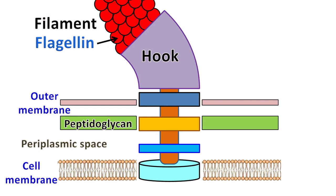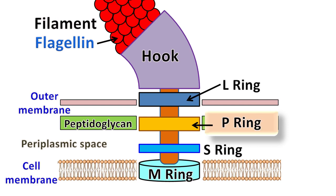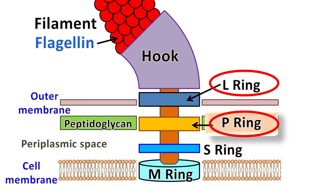The basal body has a rod-like structure which is connected with disc-like structures known as the M-ring, S-ring, P-ring, and the L-ring. The M-ring is the one which rotates freely in the plasma membrane. The L-ring and the P-ring act as bearings.